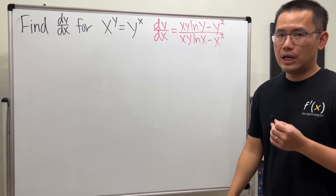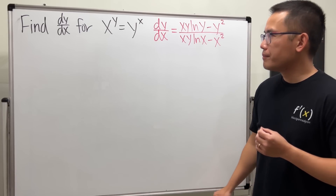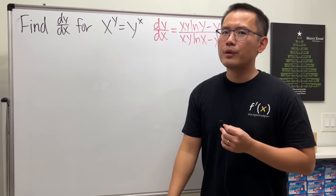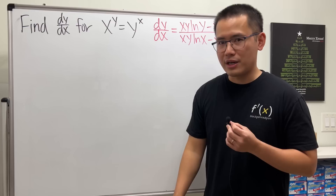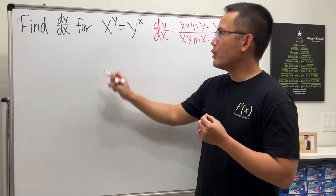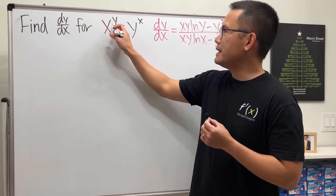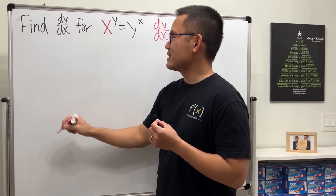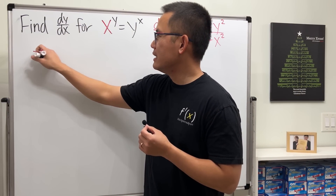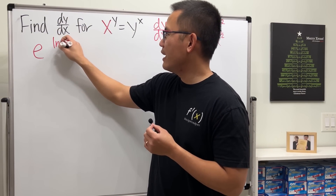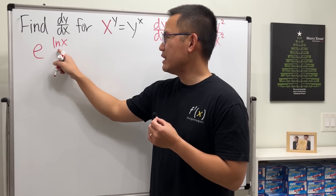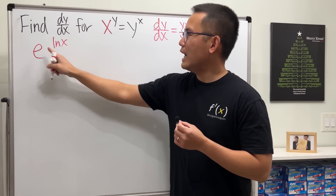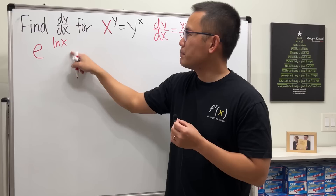Now let's see how we can do it another way. Notice we have a function to a function power, so we cannot take the derivative of this directly — we like to have base e for taking the derivative. So for the x we are going to rewrite it as e to the ln x power, because e and ln cancel so we still have x back.